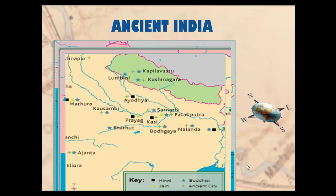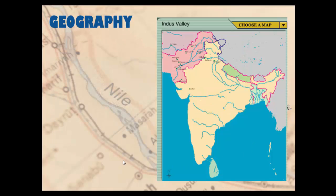The other part is the Gangetic Plain, which is the Ganges River and all the rivers that feed it coming out of the Himalayan mountains. This is the heart of Hinduism, Buddhism, and Jainism. Ancient cities here include Pataliputra and Nalanda — river valley civilizations in India.